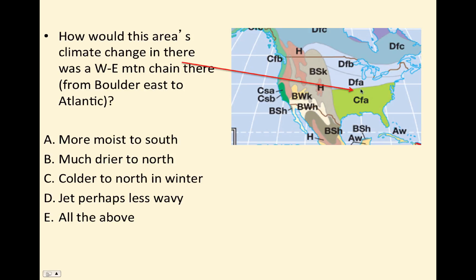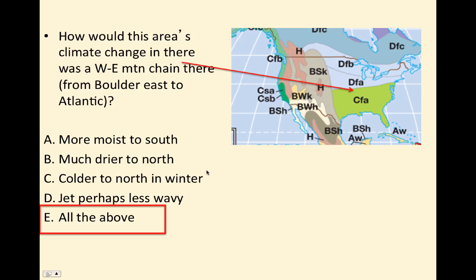Thinking about the Great Plains battle zone — the jet stream creates extratropical cyclones, forcing warm moist air up from the south and cold dry air from the north. They collide, producing jet-driven storms. A thought question: how would this area's climate change if there was a west-east mountain range from Boulder east to the Atlantic? Would it be more moist to the south, much drier to the north, colder to the north in winter, and would the jet perhaps be less wavy? The best guess would be all of the above.